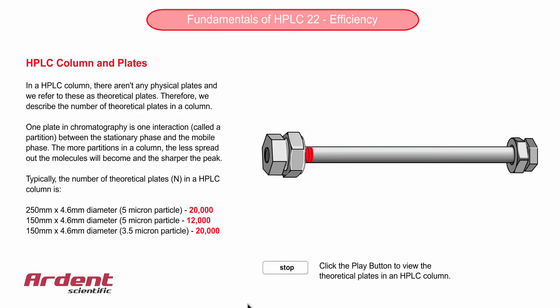The other major factor in the number of plates in the HPLC column is the size of the particles. Smaller particles are better, and you can see that as we reduce the particle size to 3.5 microns, the plate count increases.